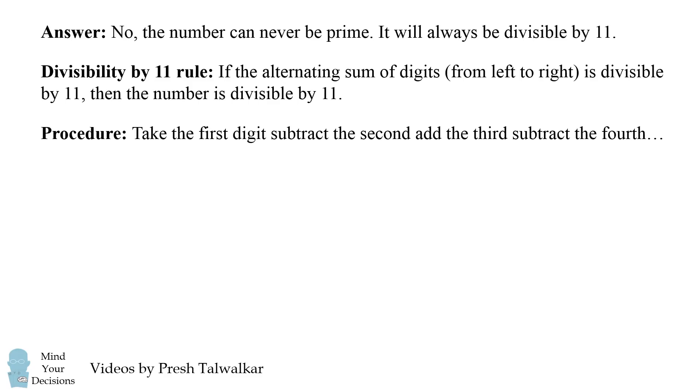The procedure is to take the first digit, subtract the second, add the third, subtract the fourth, and so on. In other words, you need to add up the digits in the odd spots, and then subtract the digits in the even spots. So let's go over a few quick examples.